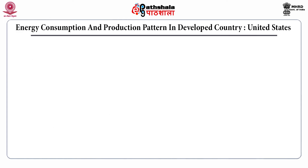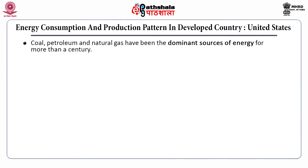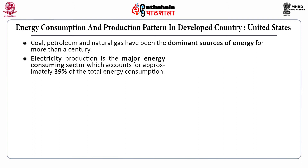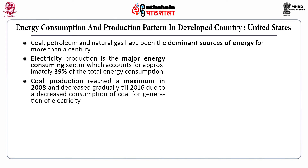Let's look at the energy consumption and production pattern in developed countries, taking the US as an example. Coal, petroleum, and natural gas have been the dominant sources of energy for more than a century. Electricity production is the major energy-consuming sector, accounting for approximately 39% of total energy consumption. Coal production reached a maximum in 2008 and decreased gradually until 2016 due to decreased consumption of coal for electricity generation.